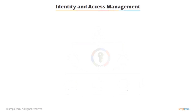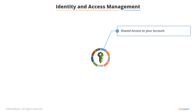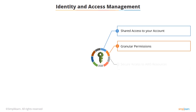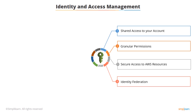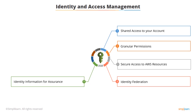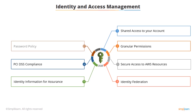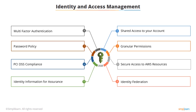Here we're going to go through the key features of IAM, and then we'll cover each of them in more depth. The first thing is it gives you shared access to your account. It provides granular permissions. It gives secure access to AWS resources. It can provide Identity Federation. Identity Information for Assurance, which is crucial these days with all the auditing that goes on. It's PCI DSS compliant. It allows you to set up a password policy and also multi-factor authentication.